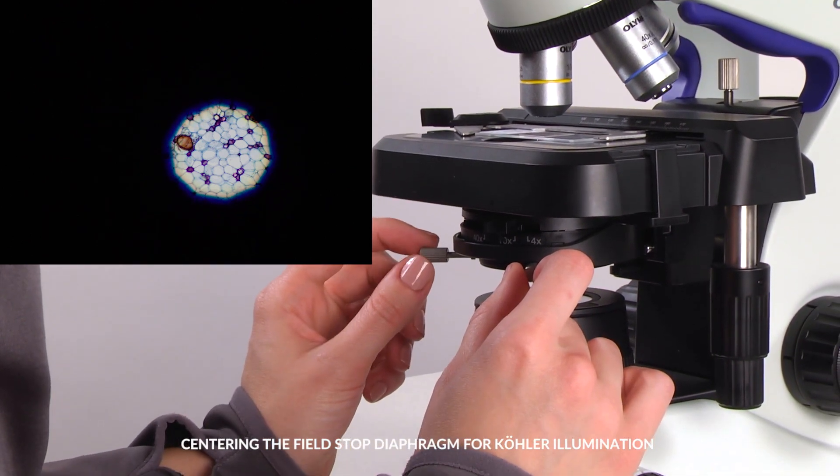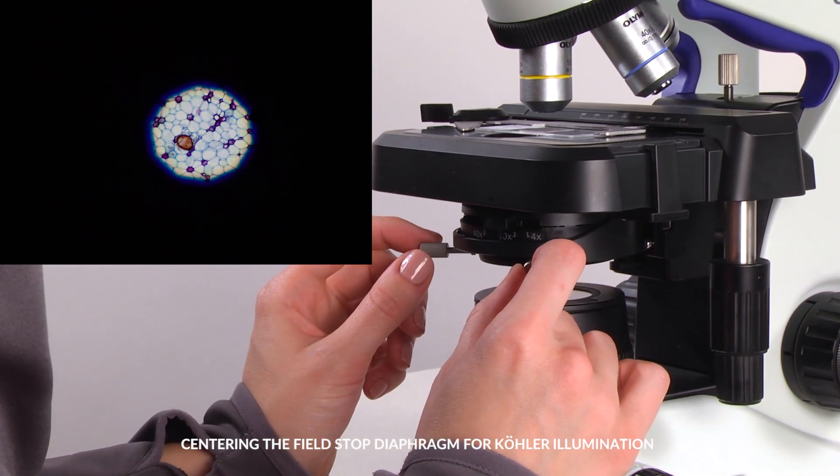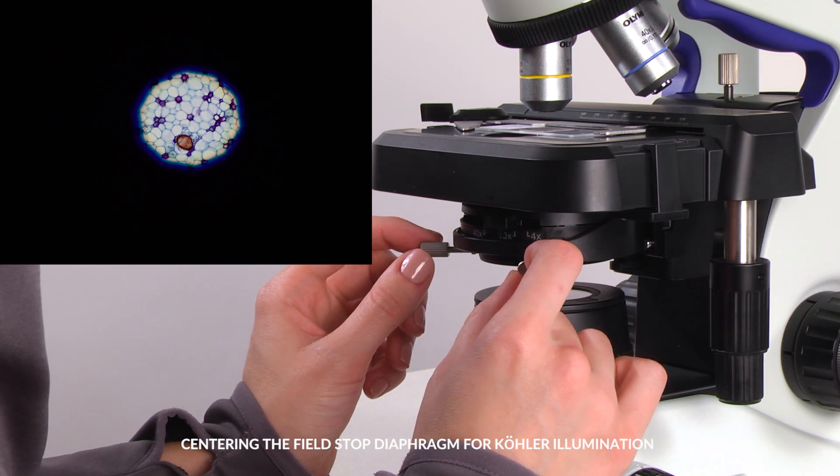Bring the field diaphragm image to the center of the field of view by rotating the auxiliary lens centering knobs.